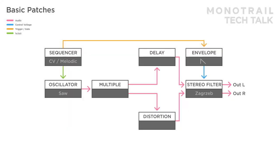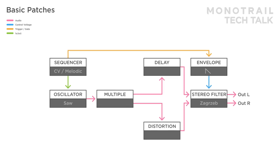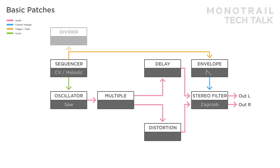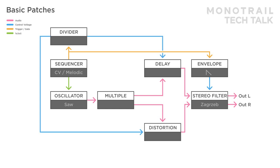To incorporate the stereo field deeper into your sound design, experiment with different and time-based modulation. For example, here the sequencer is also driving a clock divider, and two different gate divisions are used to modulate the delay and distortion.